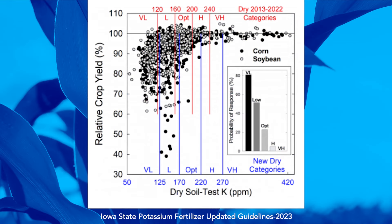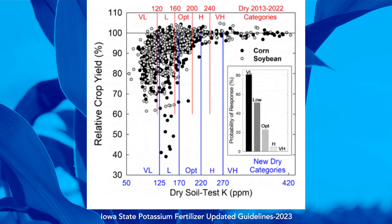So there are lots of reasons why potassium can be challenging. One way to overcome the unknowns about whether you have enough potassium in the soil would be to build your fertility levels above that 225 parts per million threshold. If you look at this figure, once you get greater than 225 parts per million, generally speaking, yields are always maximized.